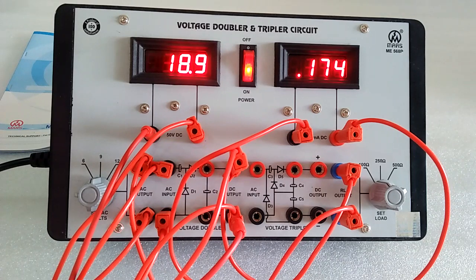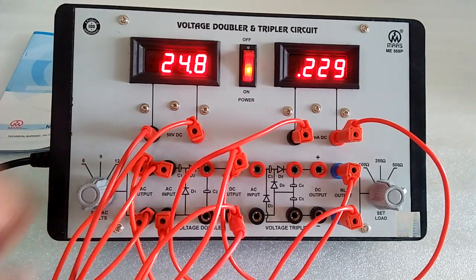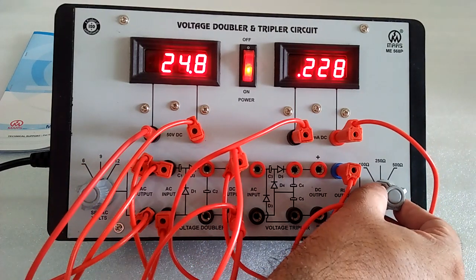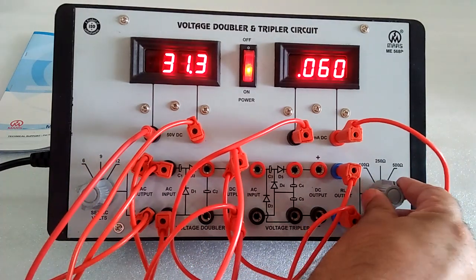On 9 volts, it doubles to around 18. On 12 volts, it doubles to around 24. You can change the load value and observe the changes.